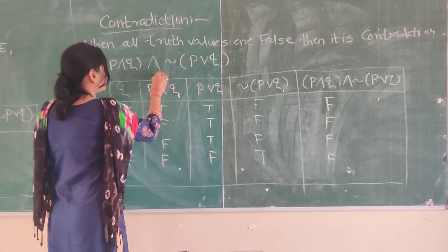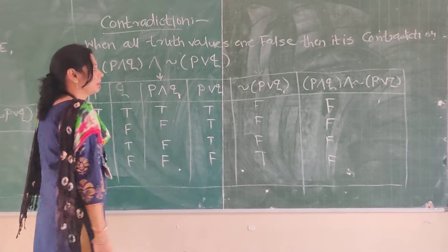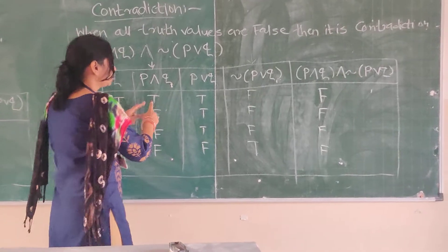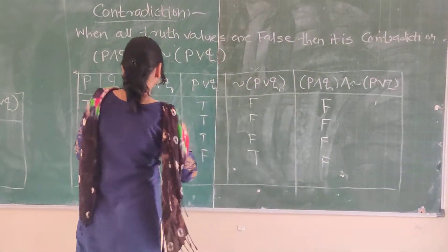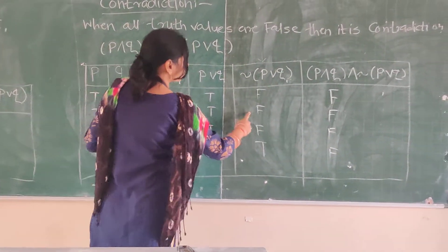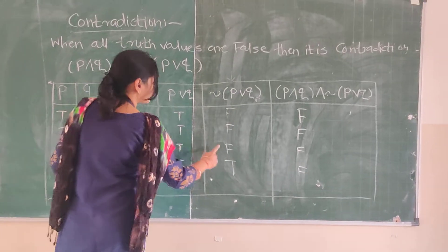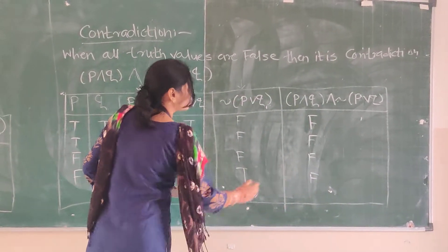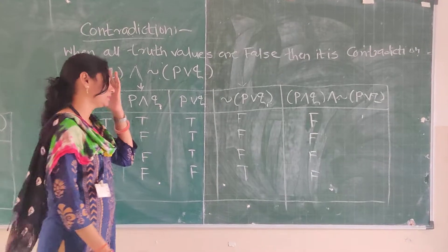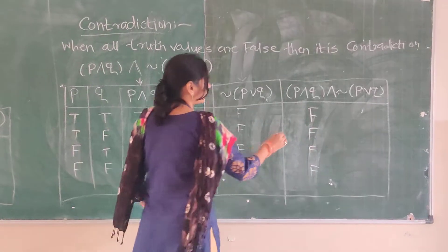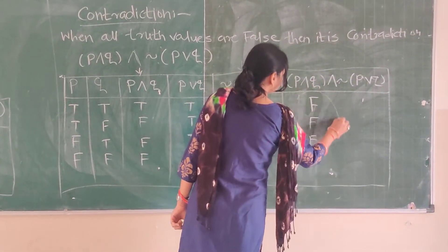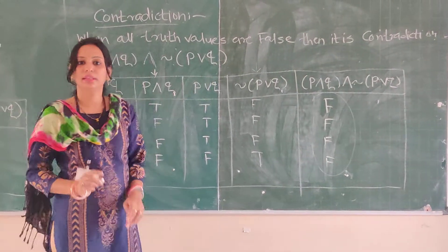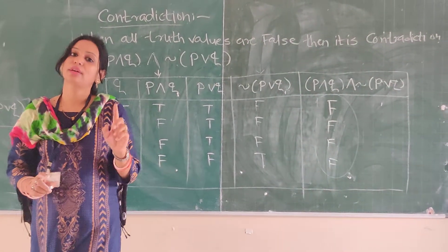Now combine p (or the relevant column) with negation of (p or q) using AND (conjunction). The results are: F, F, F, F, F, F, F, F, F. Since the output column gives us all truth values false, it is called contradiction.